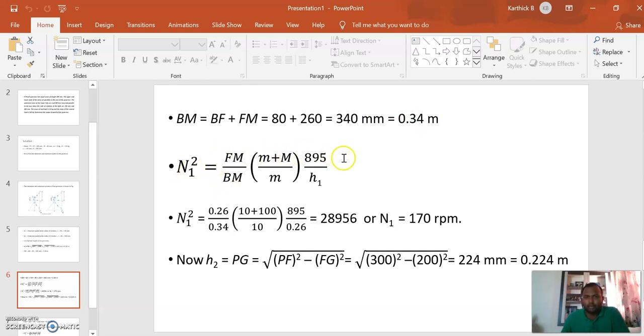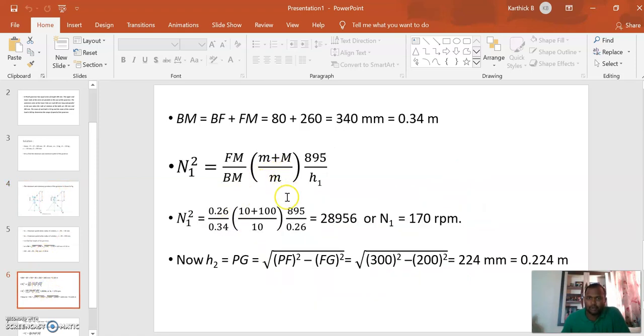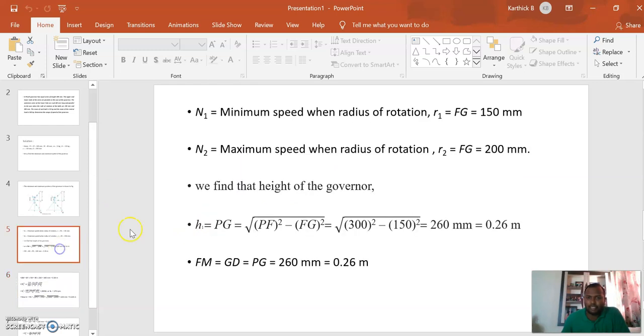Now we find the minimum speed. N1 squared equals FM by BM, which is 0.26 by 0.34, times (m + M) by m, times 895 by h1, where m is 10 kg and M is 100 kg.